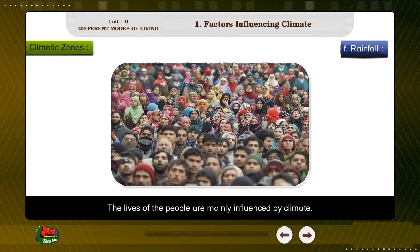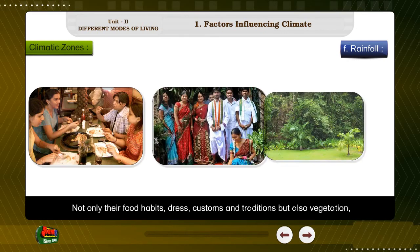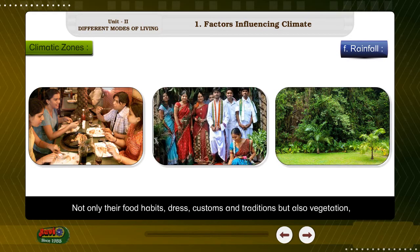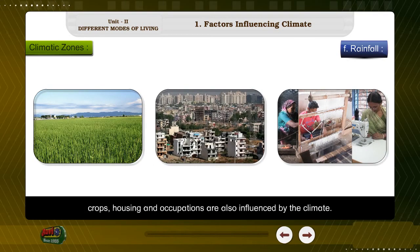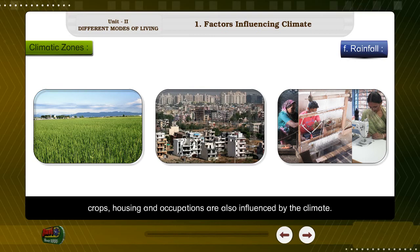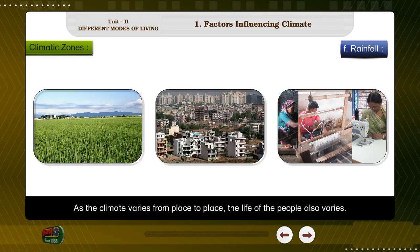The lives of the people are mainly influenced by climate. Not only their food habits, dress, costumes, and traditions, but also vegetation, crops, housing, and occupation are also influenced by the climate. As the climate varies from place to place, the life of the people also varies.